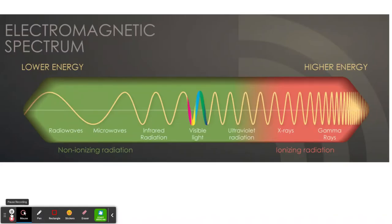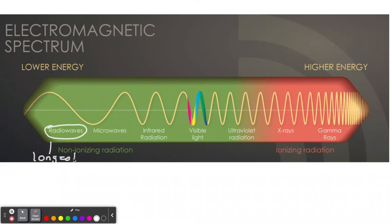Here is the spectrum. We have radio waves, which are the longest, all the way on one end, and gamma are the shortest on the other end. You can see in green, all this is non-ionizing radiation. Non-ionizing radiation is safer than ionizing radiation.